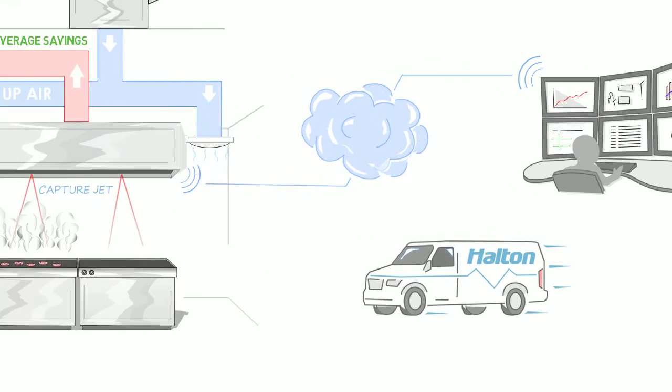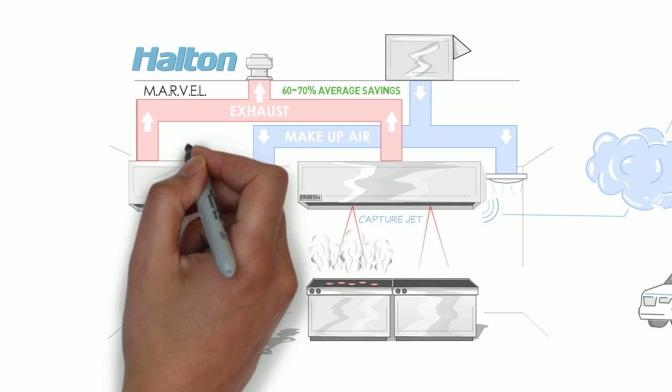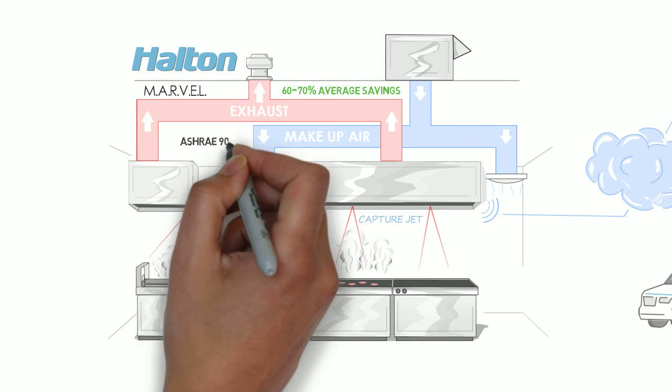Halton knows that all kitchens are not the same. That's why they offer several demand control kitchen ventilation options to fit your needs and to help you meet ASHRAE 90.1 requirements.